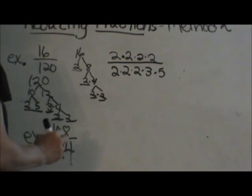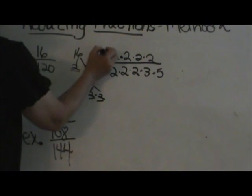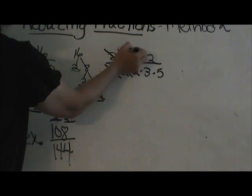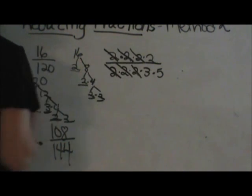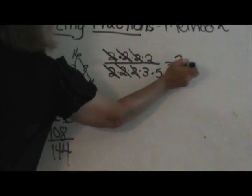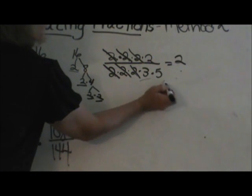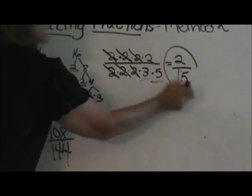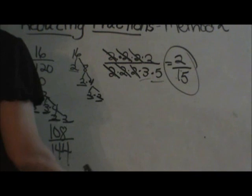Now comes the fun part. I get to do my canceling. Cancel, cancel, cancel. Anything over itself is 1. What have I got left? 2 on the top and then on the bottom I have 3 and 5. 3 times 5 is 15. So the answer is 2 fifteenths.